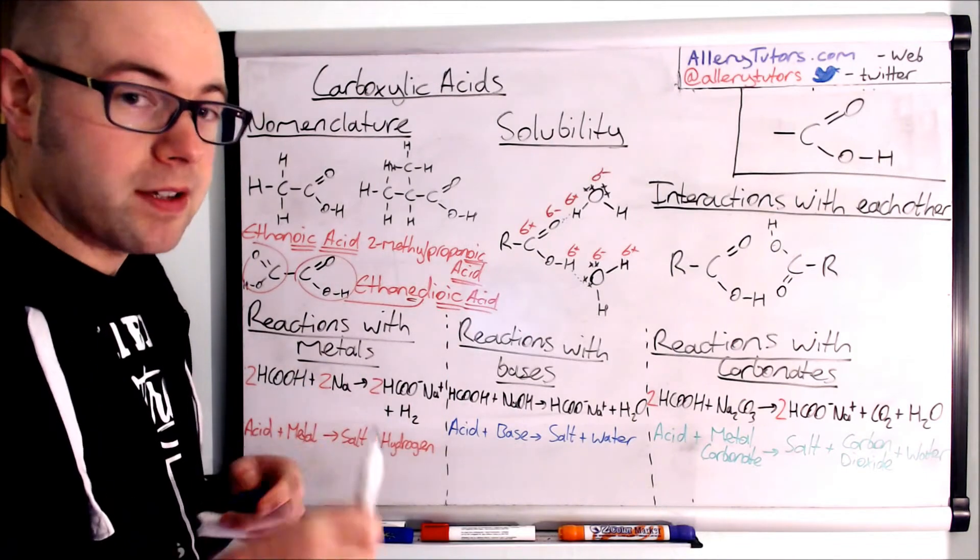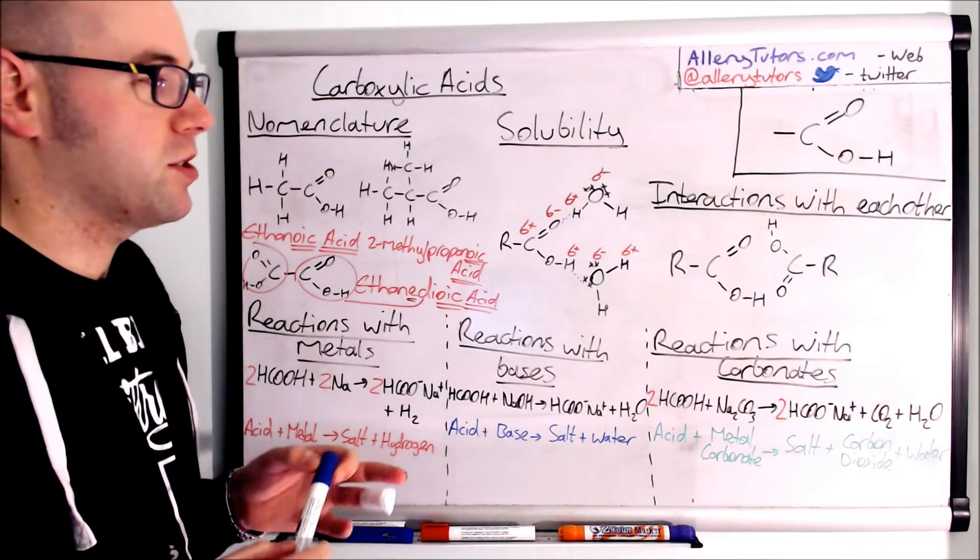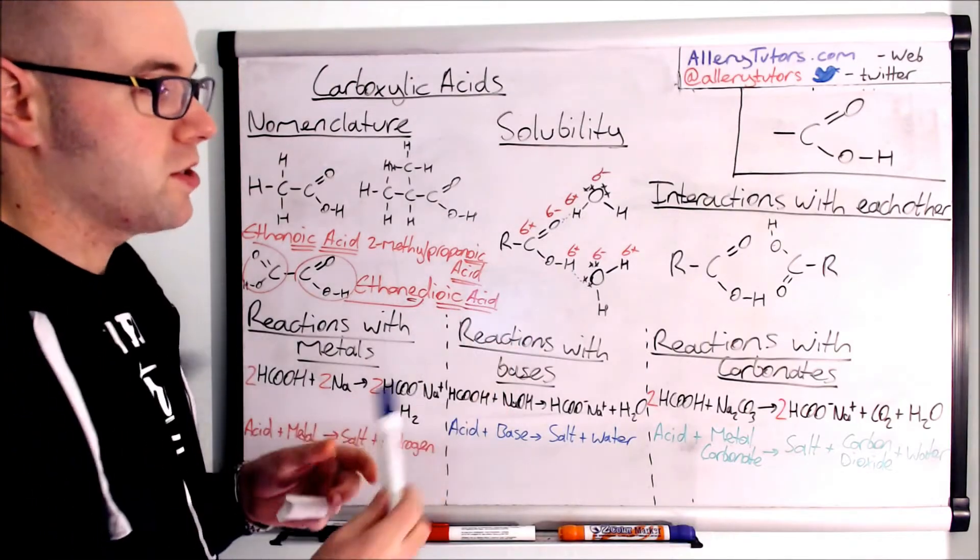And you can see the hydrogen bond is always between the delta positive on one molecule to the lone pair of electrons on the other. So make sure you're drawing your hydrogen bond doing that. You put it anywhere else you won't get the mark. So make sure you're actually really specific there. It's easy marks to lose.